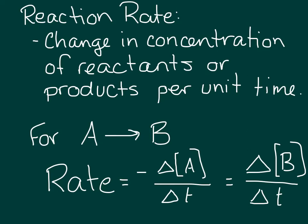Notice that there's a negative sign here. The reason for that is that the rate of any reaction is always expressed as a positive quantity. But the concentration of A, the reactant, will be decreasing over time, because as the reaction proceeds, A is used up.